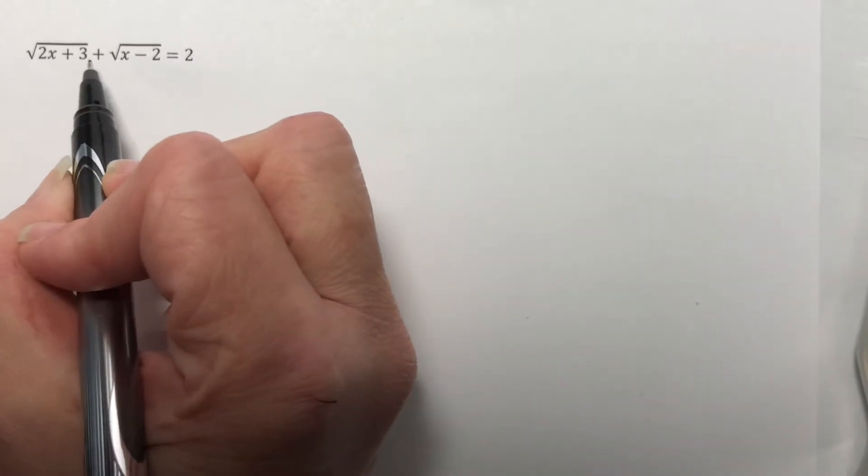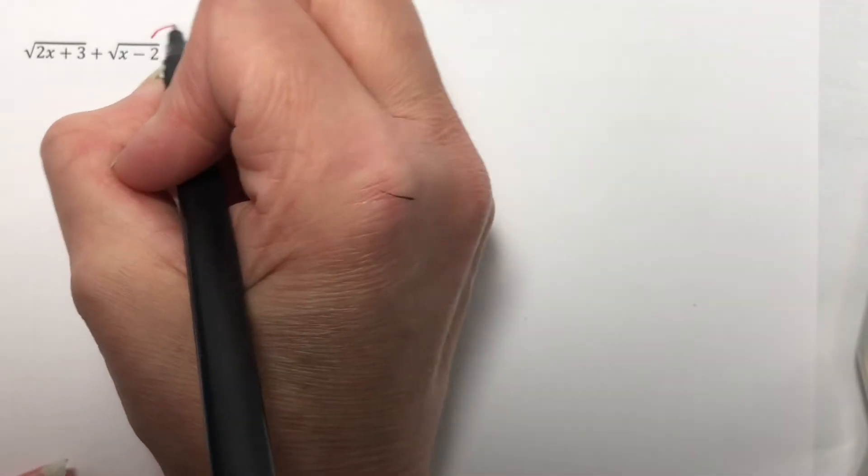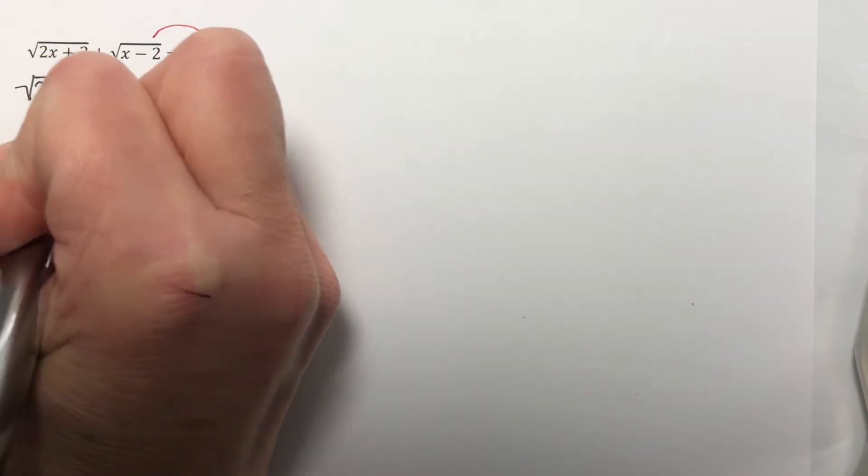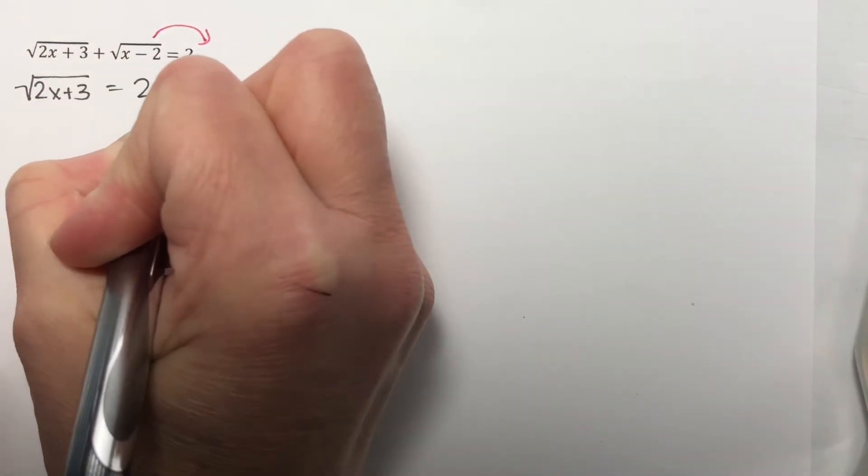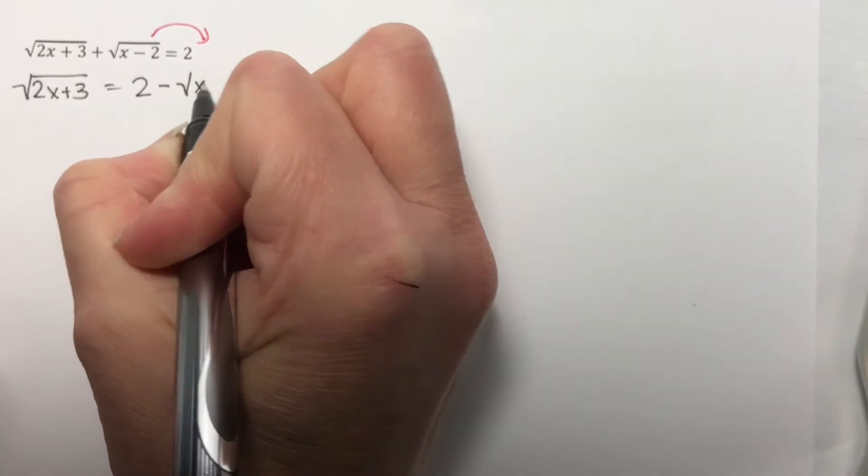This is part 3 of section 1.6. I want to solve this, and I need to get one of my radicals by itself, so let's just move this one over here. So that gives me the square root of 2x plus 3 is equal to 2 minus the square root of x minus 2.